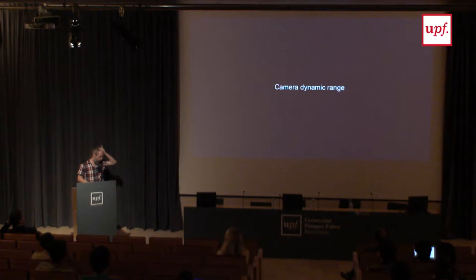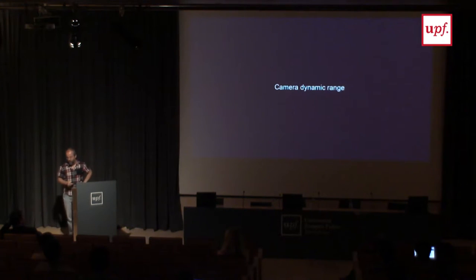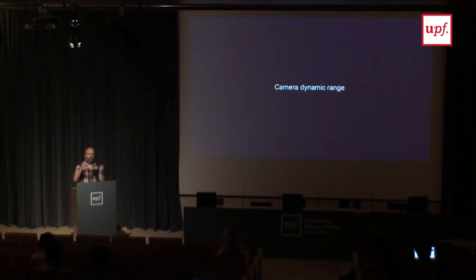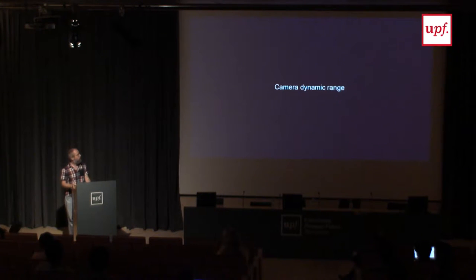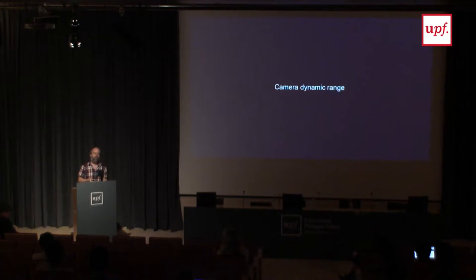Let me start by talking about what dynamic range is and what is the dynamic range of a camera. The dynamic range of a scene is, you can think of it as the ratio of contrast — the difference between the brightest and the darkest points in a scene. You compute this ratio, and that ratio is the dynamic range. Cameras are able to capture a given dynamic range, which is usually much smaller than that of common natural scenes.